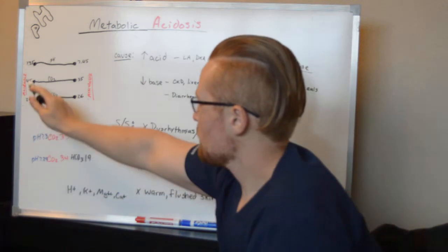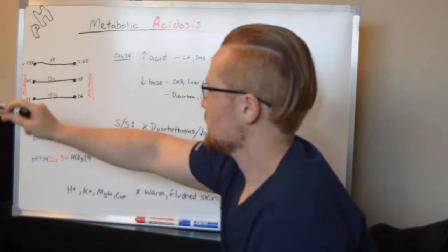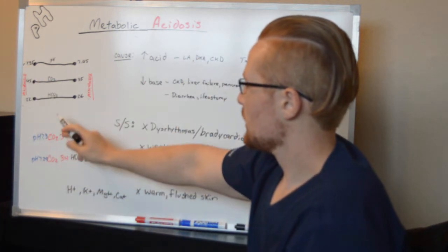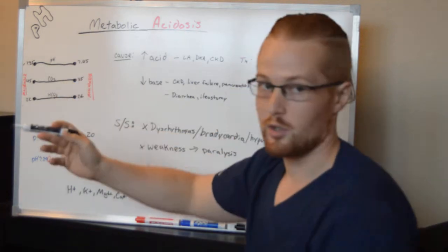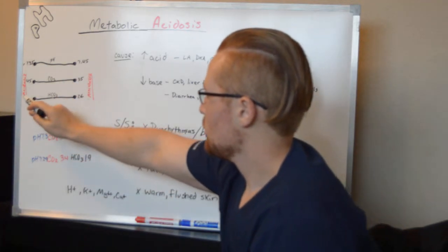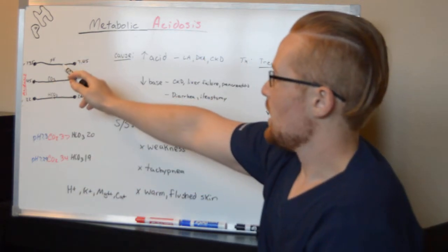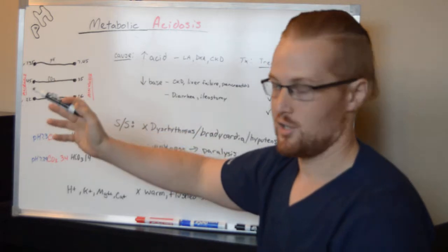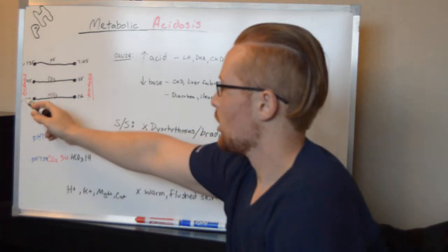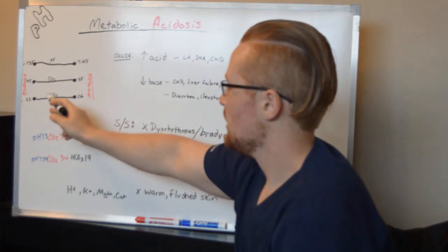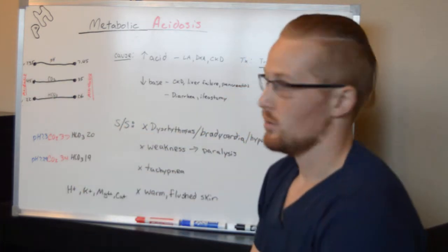Here's an example: pH is 7.3, so that's on the acidic side. Carbon dioxide is 37, that's within normal ranges. Bicarbonate is 20, which is on the acidic side. First step: look at the pH, it's acidic. What matches? The bicarb is acidic, so that tells us it is a metabolic acidosis.